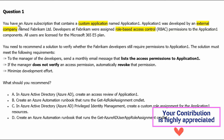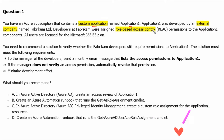Question 1. You have an Azure subscription that contains a custom application named Application 1. Application 1 was developed by an external company named Fabricam Limited. Developers at Fabricam were assigned role-based access control permissions to the Application 1 components. All users are licensed for the Microsoft 365 E5 plan.